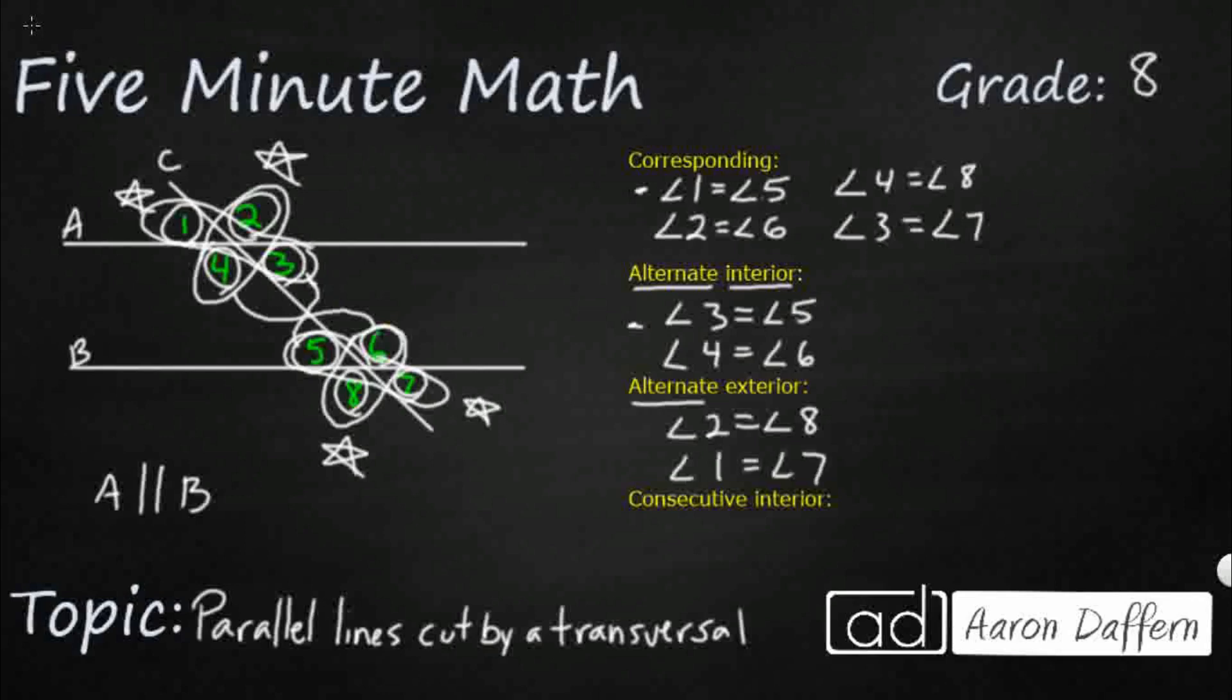Now, the last thing is a little bit different. Consecutive interior. So watch this. Angle 3 and angle 6 are not the same. But they are consecutive and they're both on the interior. Same thing with angle 4 and angle 5. So they are not the same. Obviously, one is acute, one is obtuse.